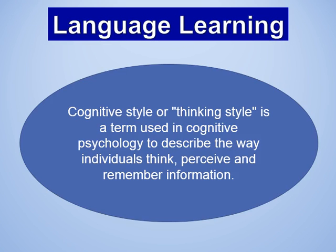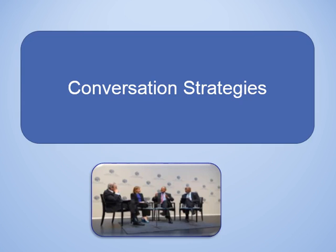Cognitive strategies are one type of learning strategy that learners use to learn more successfully. These include repetition, organizing new language, summarizing meaning, guessing meaning from context, and using imagery for memorization. In the classroom, cognitive strategies include making mind maps, visualization, association, mnemonics, using clues in reading comprehension, underlining keywords, scanning, and self-testing and monitoring.